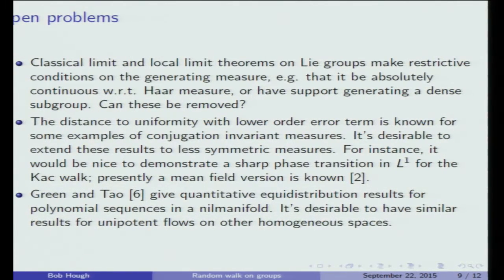The last example: a number of years back now, Green and Tao have a quantitative equidistribution result on nil manifolds, and we'd like to know corresponding results for unipotent flows on other homogeneous spaces. That's not exactly a random walk in the group, but it's sort of tangentially related. If I was interested, that's something else I'm interested in.